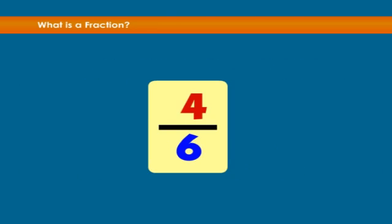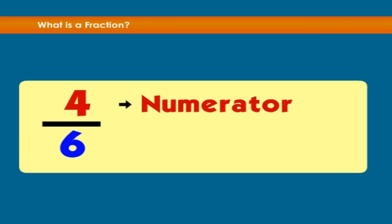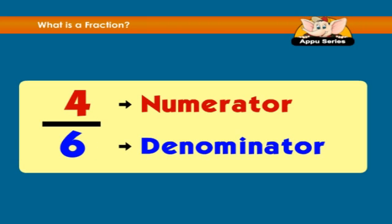The top number is called the numerator. The bottom number is called the denominator. We read this like four sixths.